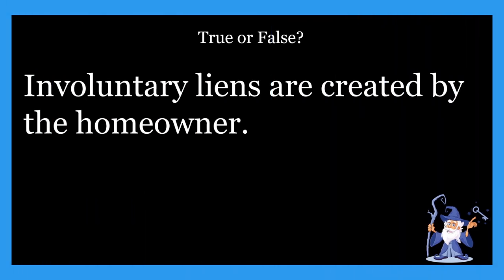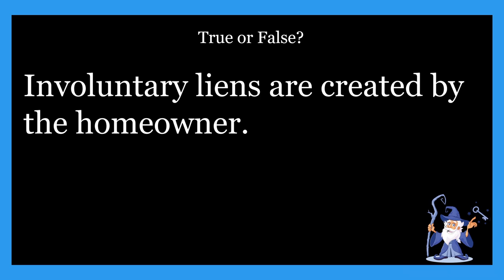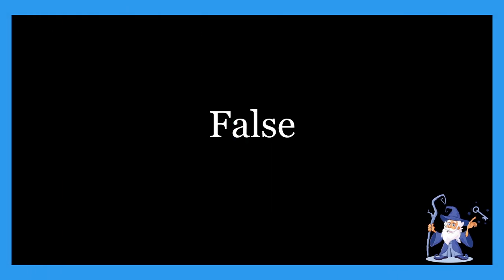Next one: involuntary liens are created by the homeowner. Is that true or false? It is false. Involuntary liens aren't created by the homeowner — it is a claim imposed against a property without the consent of its owner. Involuntary liens are placed usually by the government or government revenue authorities, for example for unpaid duties or taxes. Involuntary liens are not created by the homeowner, but by somebody else.